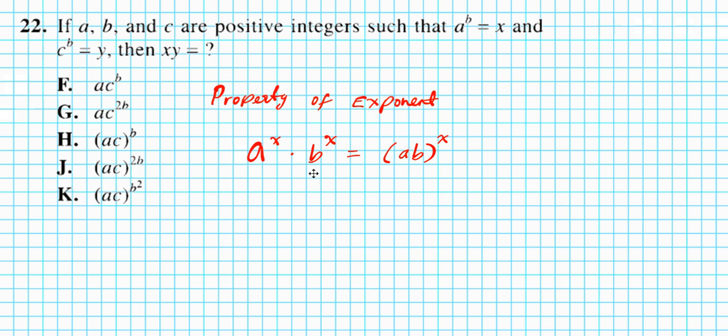We're going to apply this to this problem. How do we know that? Well, let me show you why we know that this is the property that we'll be applying. We have a to the b is equal to x, and c to the b is equal to y. We're asked to find x times y. The product of x and y. We know that x is a to the b times y, which is c to the b.